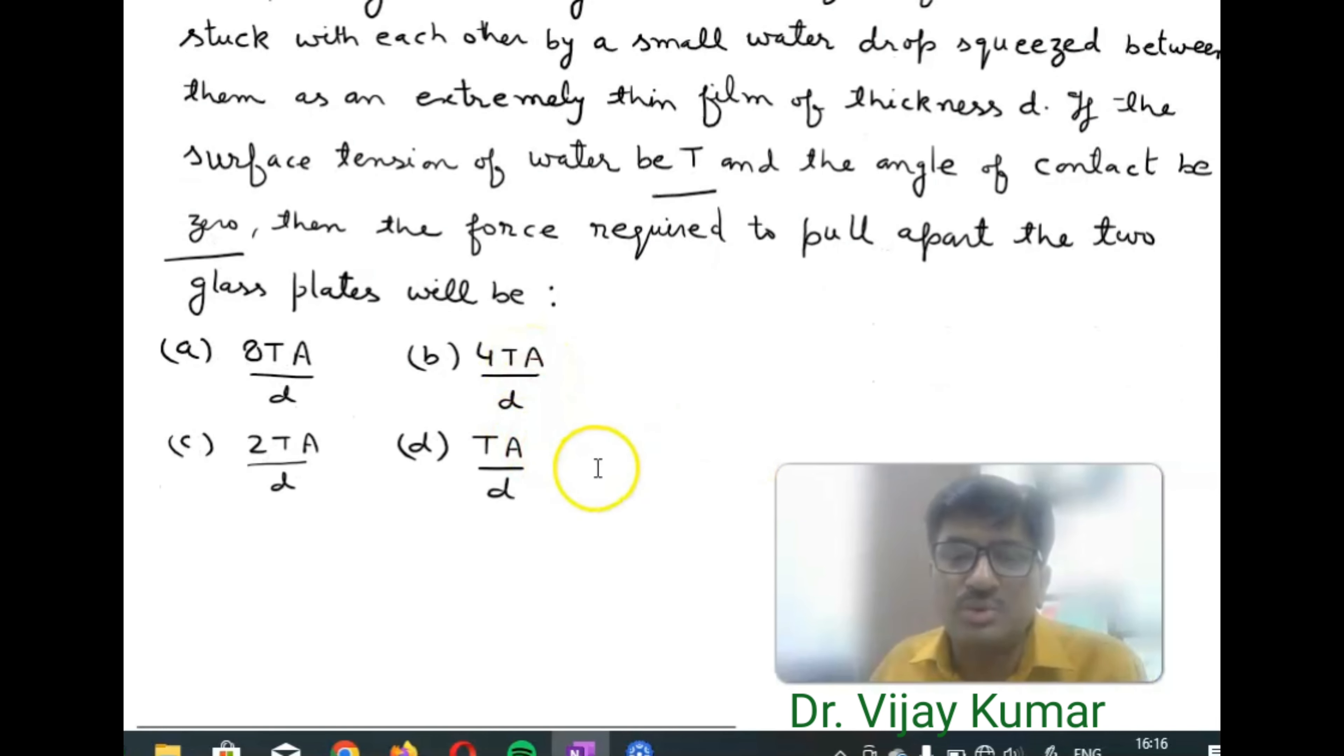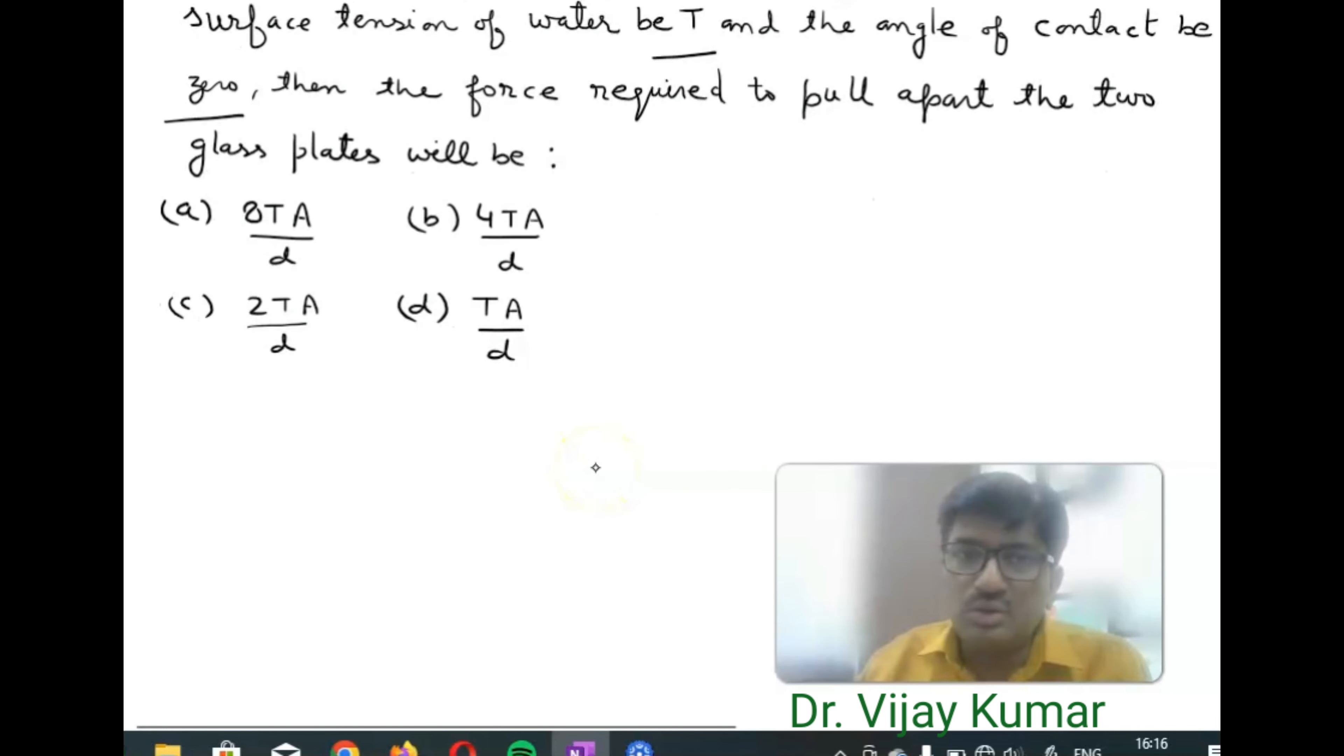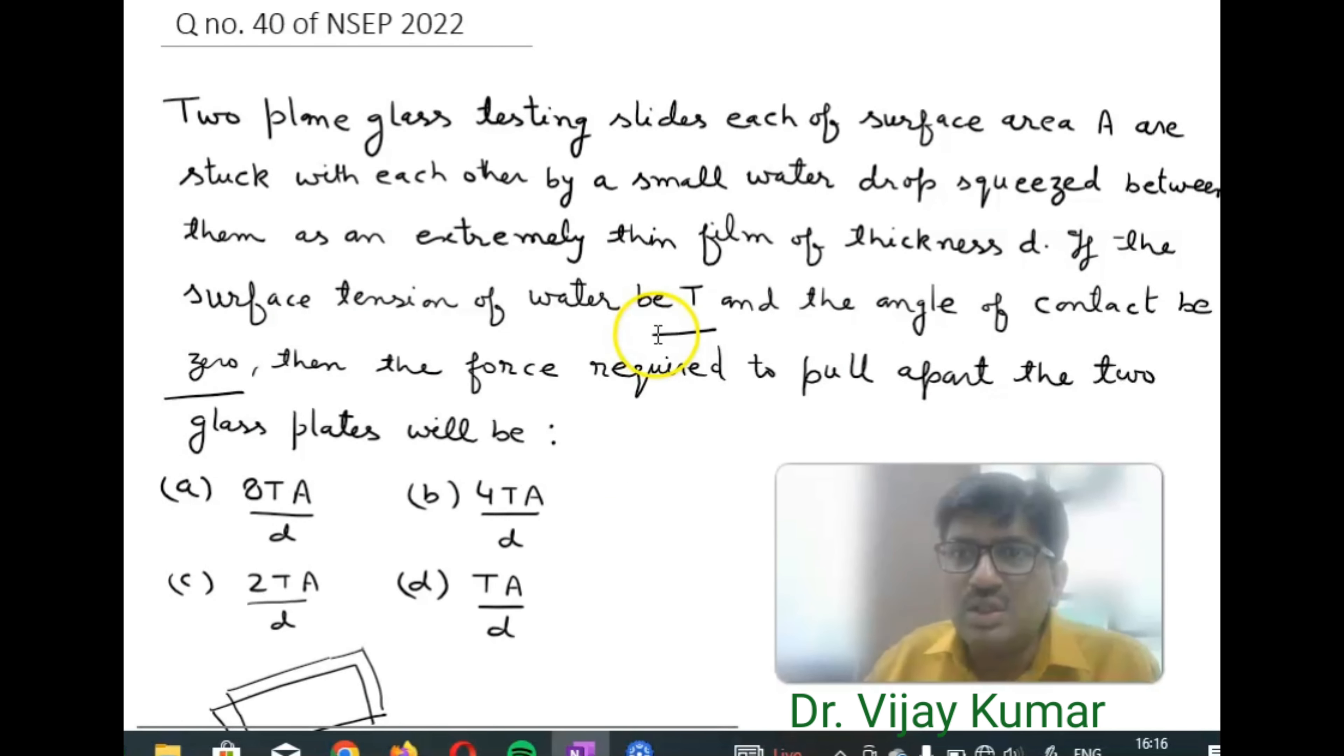The question is very simple. Suppose this is one plate and another plate is stuck on each other. If we determine the work done, then it should be force into D. In the question it is giving that the thickness of the film is D.